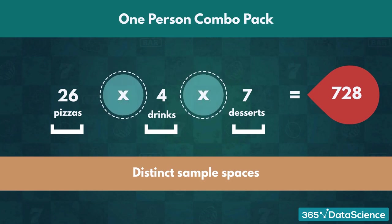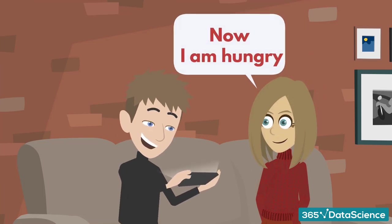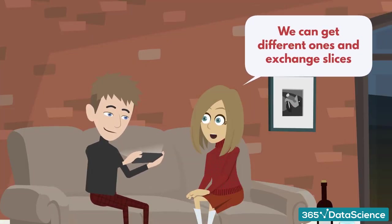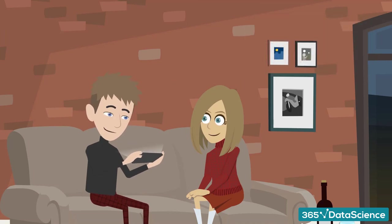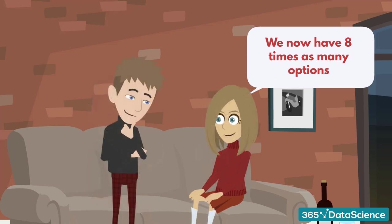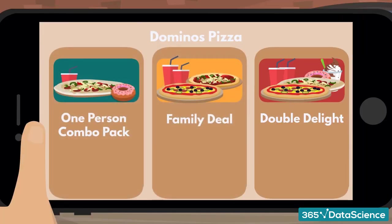We use multiplication here because regardless of which of the 26 pizzas we get, we can accompany it with any of the 4 beverages, and for any of those pizza and drink combos, we have 7 different dessert options. Fascinated by the huge variety, your friend reconsiders and decides to get some food too – not because she's hungry, but to increase the number of options you have. Thus, you're compelled to get one of the two larger deals. Amy states that since you're getting two pizzas now, you can get different ones and exchange slices, and proclaims that since we're ordering two of each of the three parts of the meal, we now have 8 times as many options.